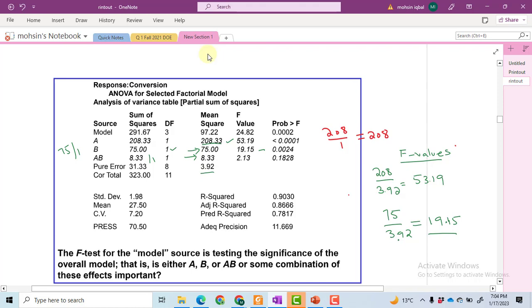Here is a question: the F test for the model source is testing the significance of the overall model. That is, is either A, B, or AB, or some combination of these effects important? The answer is yes—A and B are found to be important variables or parameters. However, their interaction effect is found to be insignificant and can be dropped from the model. Thanks for watching this part. Bye.